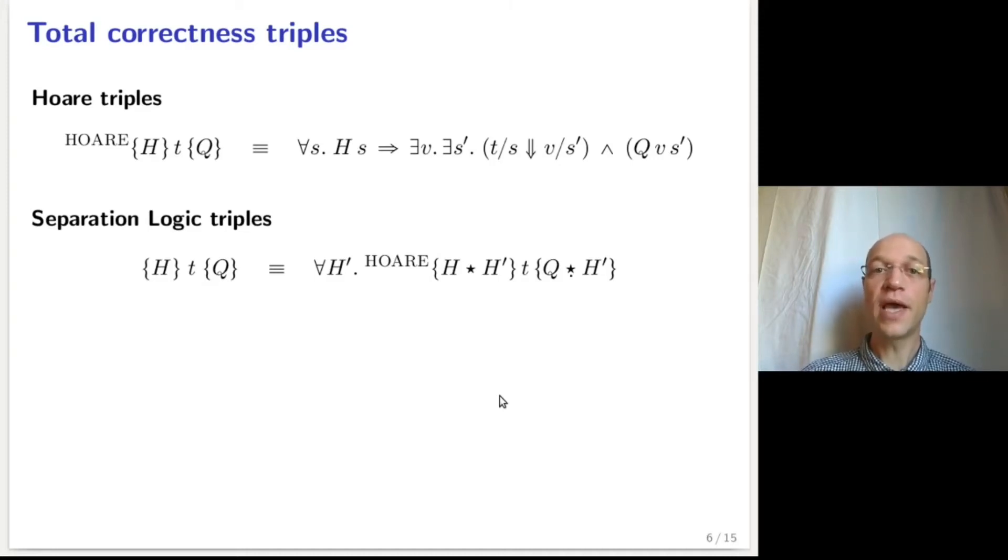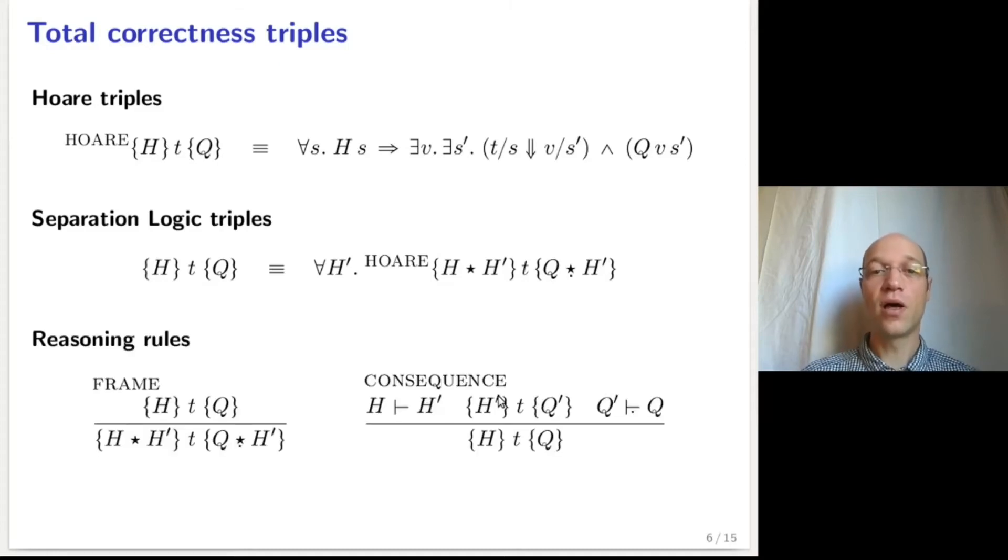A separation logic triple, htq, is defined by quantifying universally on a predicate h' that describes the rest of the world, and asserting that the triple made of h star h' and q star cube h' makes up a valid hard triple. The standard technique of baking in the frame rule leads to simple proofs for the structural rules, such as the frame rule or the consequence rule.